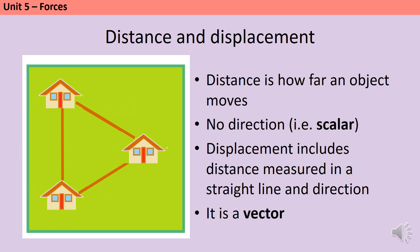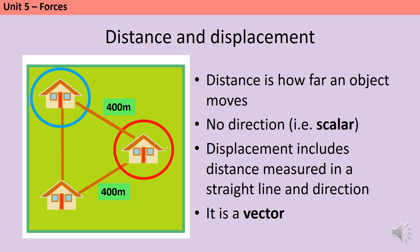Distance is how far an object moves. It doesn't involve direction, so that makes it a scalar quantity — it's the answer you'd give if someone asked how far you'd walked today, or the number you'd use to calculate how much fuel you needed. Displacement is different because it involves both the distance measured in a straight line from the start point to the finish point, and also the direction of that straight line — making it a vector quantity. So here, the distance I've travelled is 800 meters but the displacement is 400 meters due south.